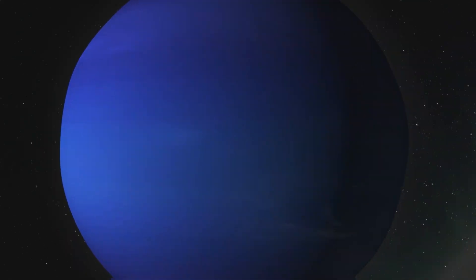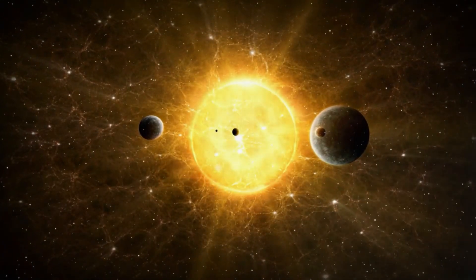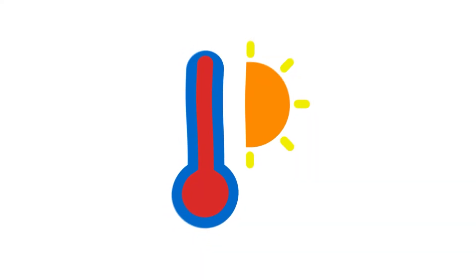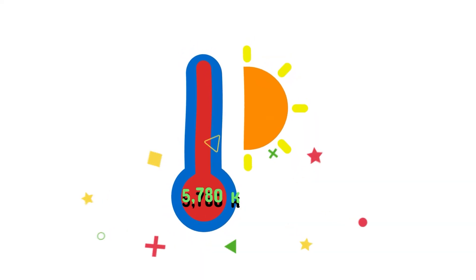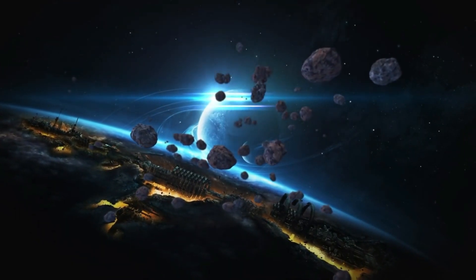The star, Kepler-725, is a G-type main sequence star, very similar in size and temperature to our Sun. It lies approximately 1,120 light-years from Earth and has a surface temperature of about 5,780 K. Its brightness and stability make it an excellent candidate for observing planetary transits and variations.